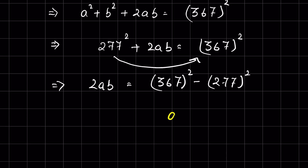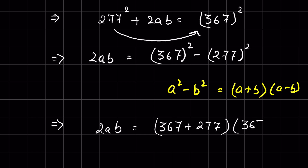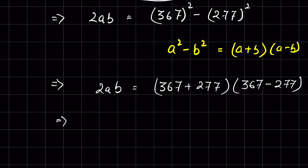This is in the form of difference of squares: a squared minus b squared equals (a plus b)(a minus b). Therefore, 2ab equals (367 plus 277) times (367 minus 277), which gives 2ab equals 644 times 90.